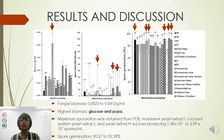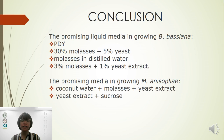Carbon sources such as sucrose, dextrose, molasses, potato, glucose, oatmeal, and coconut water, and nitrogen sources such as yeast extract, purist yeast, and peptone were used in this experiment. According to Sano and Oliveira, the best liquid media contains low levels of nitrogen and high amounts of carbon source. Our study suggests that the promising liquid media for Bovera Baciana are potato dextrose yeast, 30% molasses with 5% yeast, molasses in distilled water, and 3% molasses with 1% yeast extract, and for Metaricium Anisoplyae are coconut water with molasses and yeast extract, and yeast extract with sucrose.